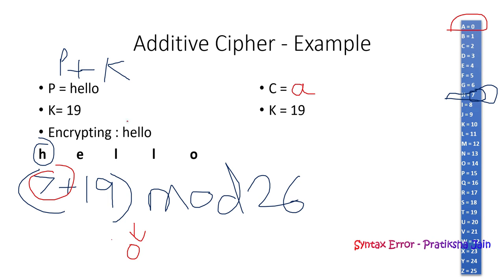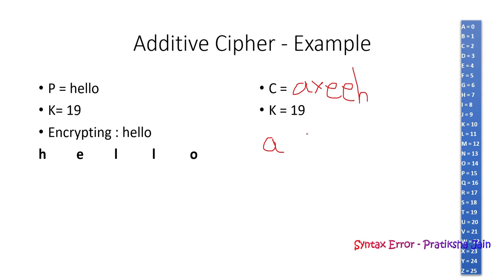You do the same process for E, L, L, and O, and you'll get the complete cipher text: A, X, E, E, H.